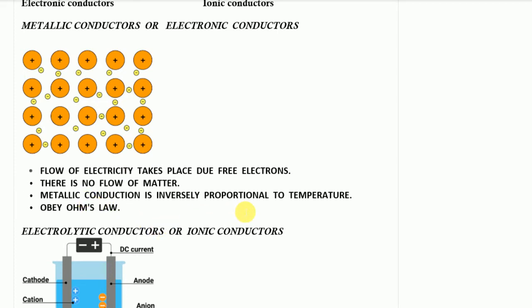Metallic conduction is inversely proportional to temperature: if we increase the temperature, metallic conduction decreases, and if we decrease the temperature, metallic conduction increases. When temperature increases, the metal gains energy and the metal ions start to vibrate within the metal, causing an obstruction to the flow of free electrons.